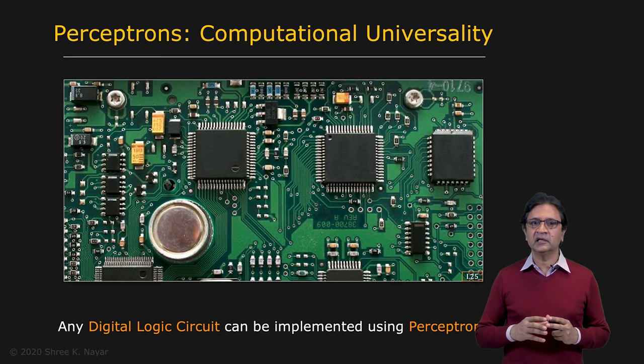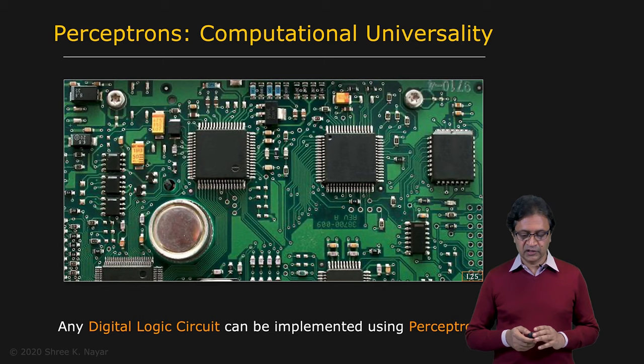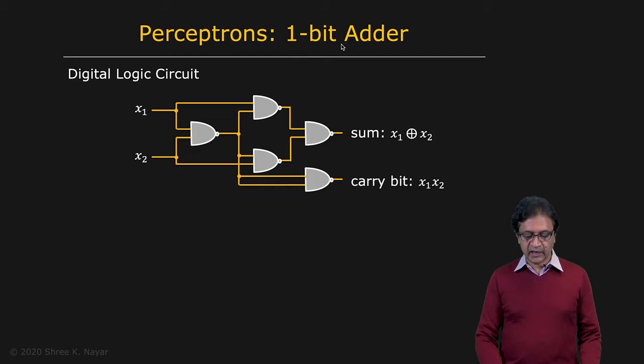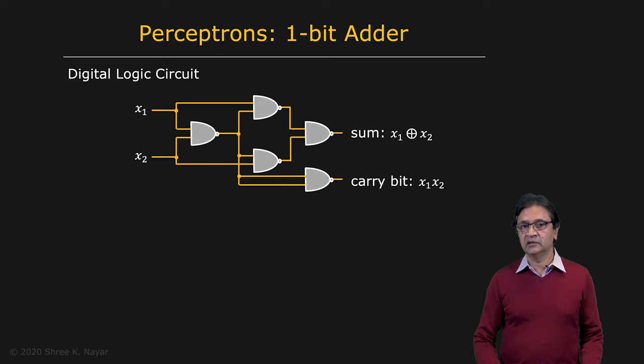Let's take a look at a simple example of such a circuit. Let's say we're looking at a one bit adder. The digital logic circuit for a one bit adder has two inputs, X1 and X2, a series of NAND gates right here. And you have two outputs. One is the sum, which is the exclusive OR of X1 and X2. And the second is the carry bit, which is the AND of X1 and X2. Since each one of these NAND gates can be represented using the perceptron we just talked about, we can simply create a perceptron network which is exactly equivalent to this digital logic circuit.